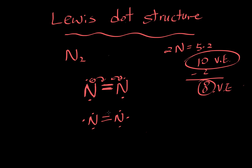But does this satisfy the octet rule? This one N has one, two, three, four, five, six, seven — only seven. Same with the other nitrogen. So we'll repeat the process: take those two electrons and make another bond. You could have up to a triple bond. So let's form N≡N with three lines in between.